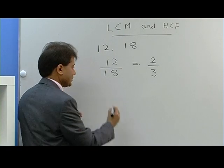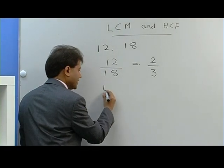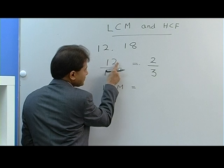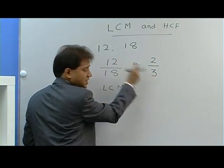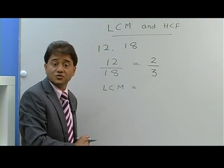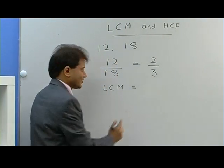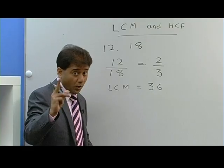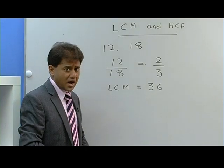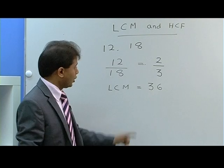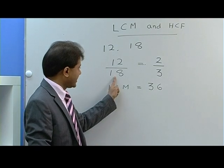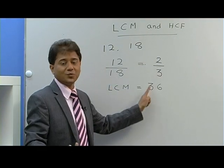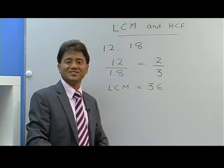Now if you want to find the LCM, what you have to do is just cross multiply. 12 times 3 — what is 12 times 3? That's 36. So 36 is your answer. If you want to check whether your answer is right, all you have to do is 18 times 2, which is also 36, which means your answer is right.